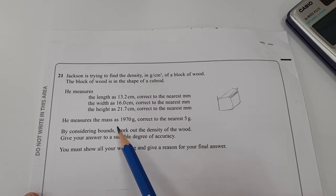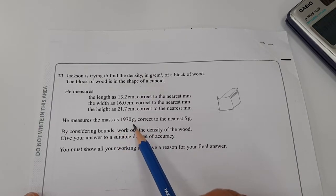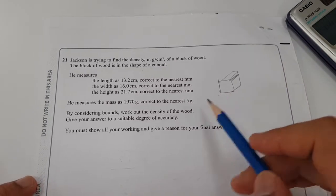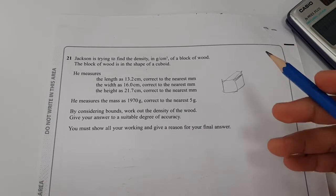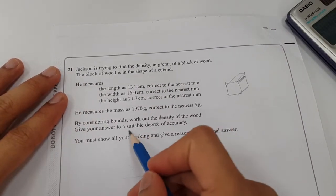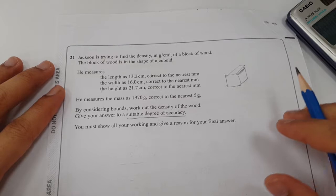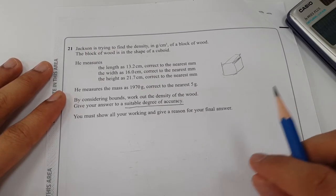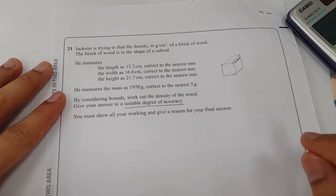He measures the mass, which is 1970 grams, correct to the nearest 5 grams. By considering the bounds, work out the density of the wood, giving your answer to a suitable degree of accuracy. When they say suitable degree of accuracy, all you have to do is both do the upper bound and lower bound.